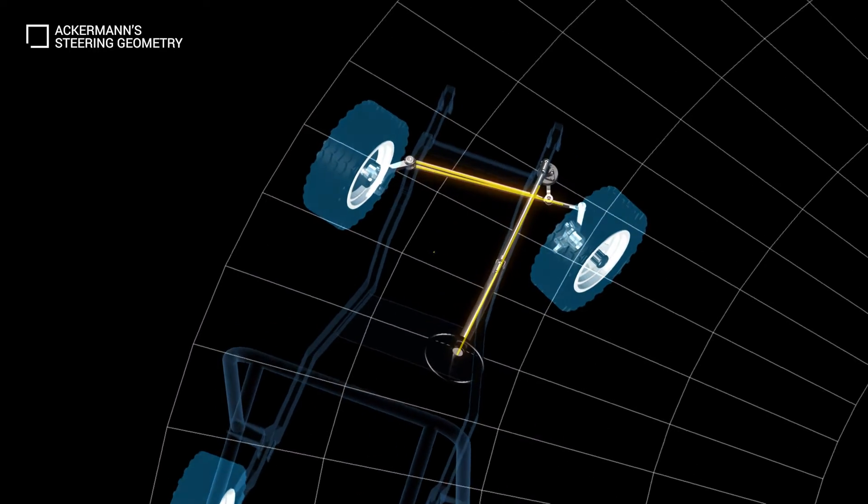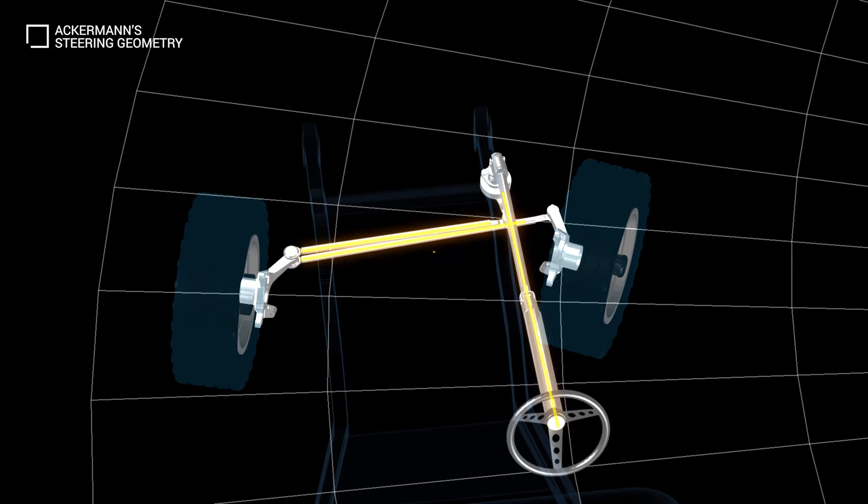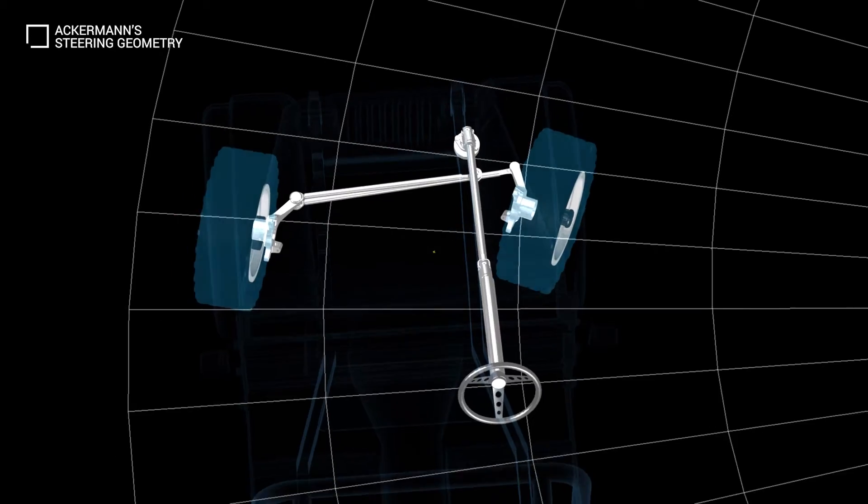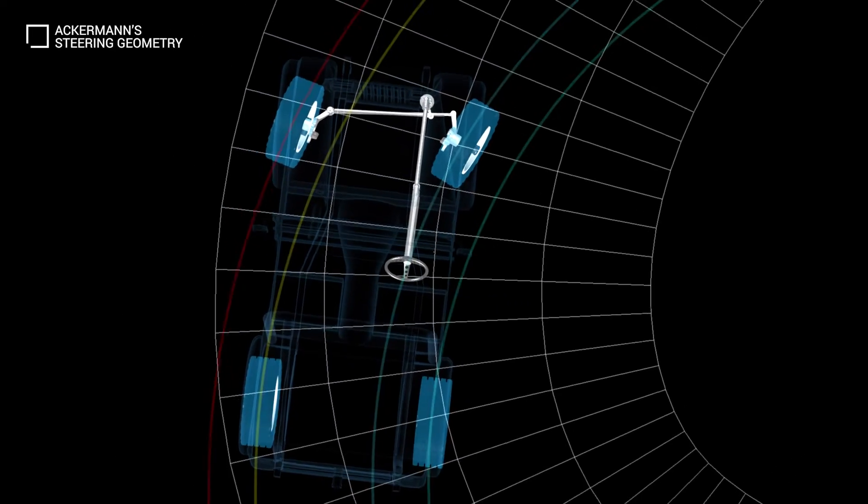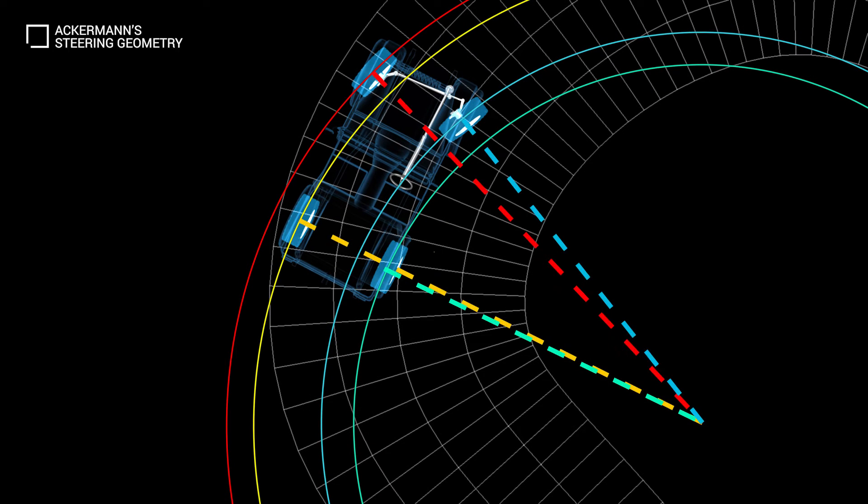This geometric arrangement of linkages in the vehicle steering has been designed to solve the problem of wheels on the inside and outside of a turn needing to follow different radii. The solution to this is for all wheels to have their axles arranged as radii of circles with a common center point.